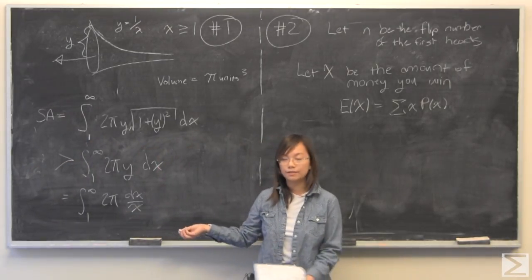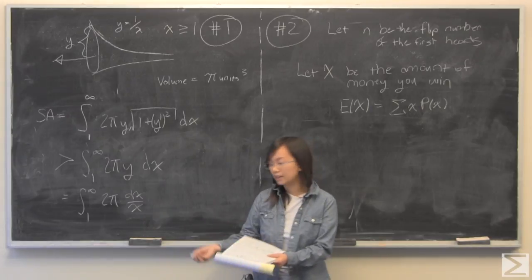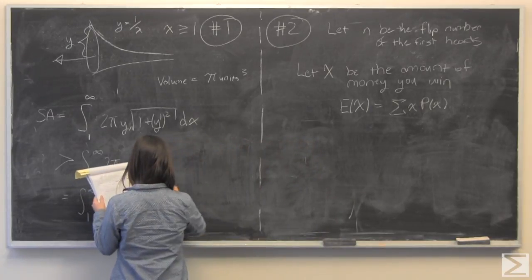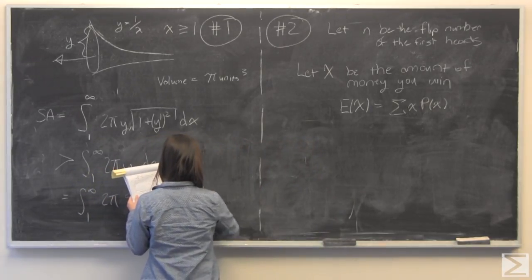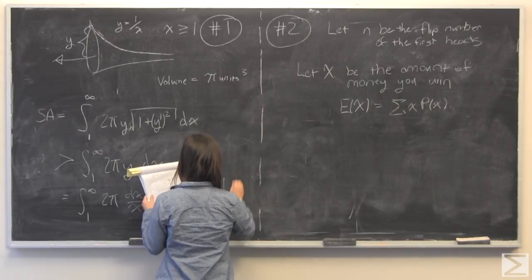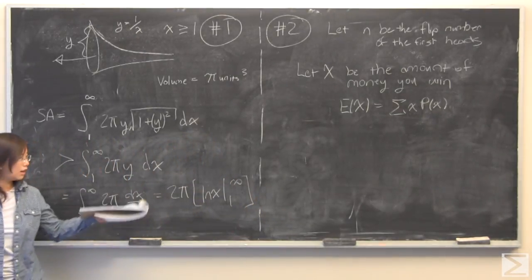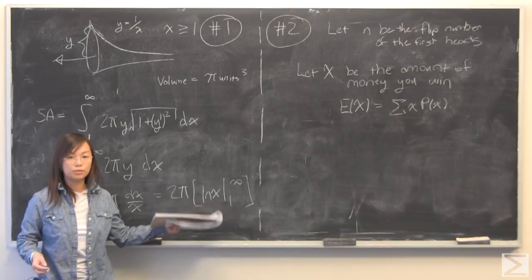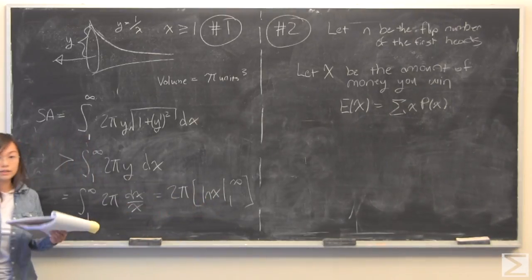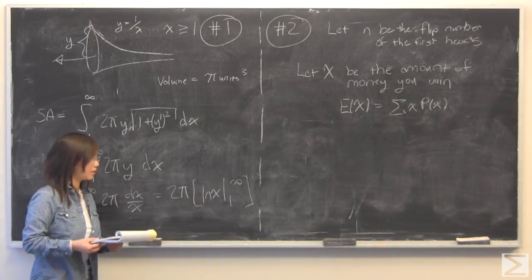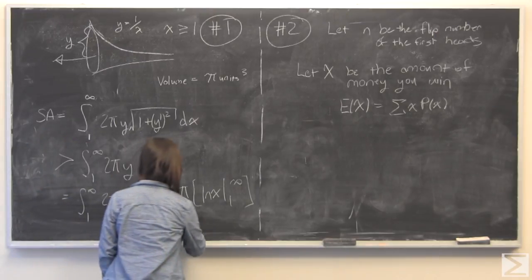So I did the same thing as before. I plugged in y is equal to one over x and what you get from this is two pi times ln of x evaluated from one to infinity. Well ln of infinity is infinity, so this is problematic because that means this goes to infinity.